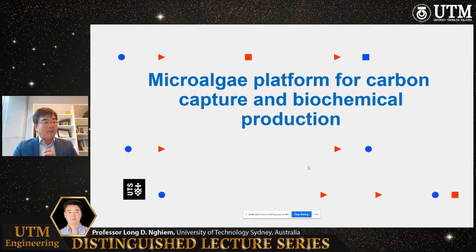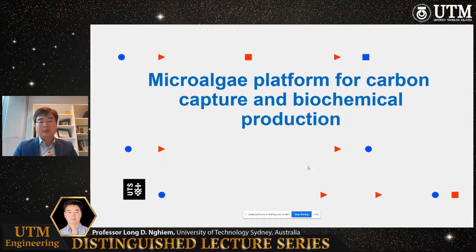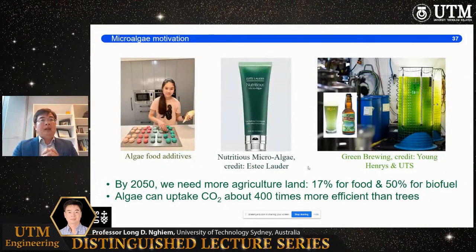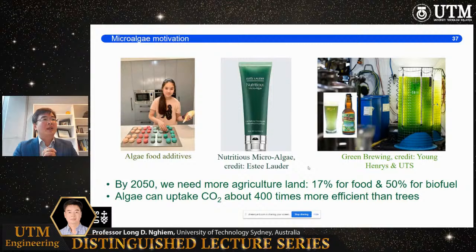I'd like to move to the last part of my talk — something I'm very excited about: the micro-algae platform for carbon capture and biochemical production. I understand the audience is quite diverse, so I'll talk a bit about why we are looking at micro-algae. Micro-algae is a long list of species that grow under sunlight whenever you have water and a bit of nutrients. They grow very fast and can be problematic in the wild — you may have heard of harmful cyanobacteria blooms.